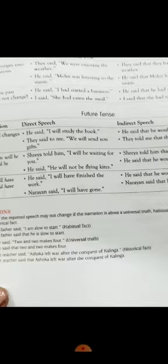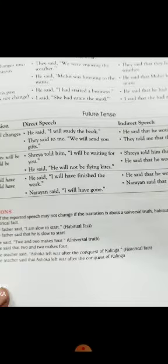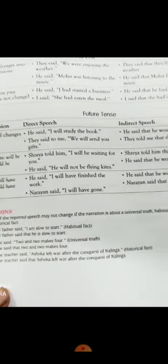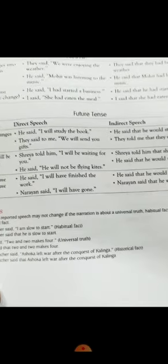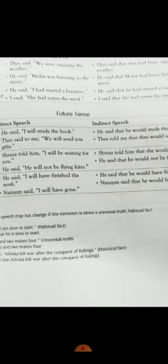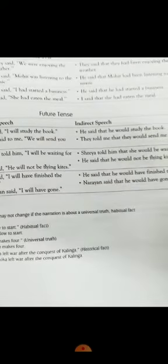He said, 'I will study the book.' As I told you, there are four or five changes in this sentence. First, 'said to' will change into 'told'; inverted comma will change into 'that' conjunction; pronoun change; verb change; and if there is any nearness word, it will change into distance. Here 'will' is used, so 'will' will be changed into 'would.' He said that he would study the book.